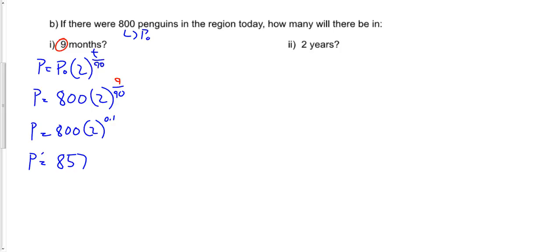It's going to tell me that my population is going to be 857-ish approximately after 9 months. So what will it be after, say, 2 years? Well, after 2 years, we need to figure out, well, how many months are in 2 years?